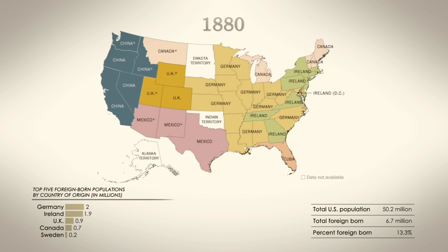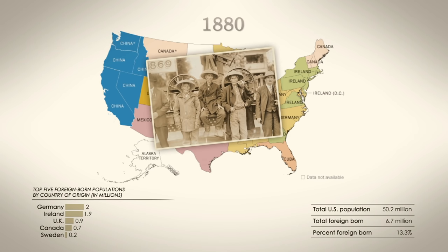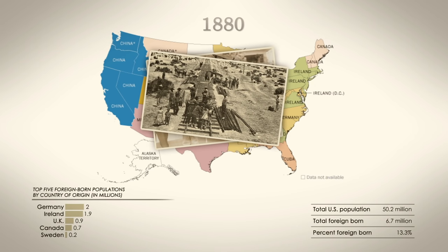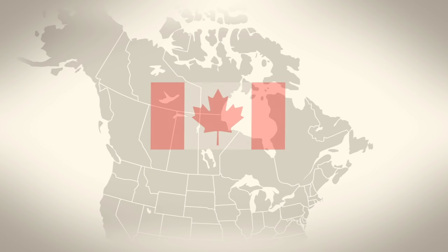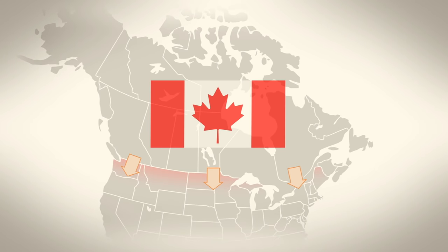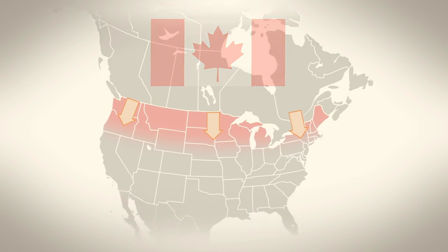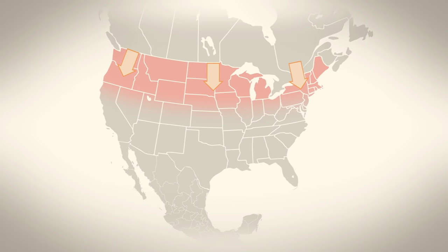The 1880 census showed that the Chinese were coming in large numbers. Many took dangerous jobs in the mines or on railroad building crews. For the next century, immigrants from Canada crossing the southern border would be the largest group settling in many of the northernmost American states.